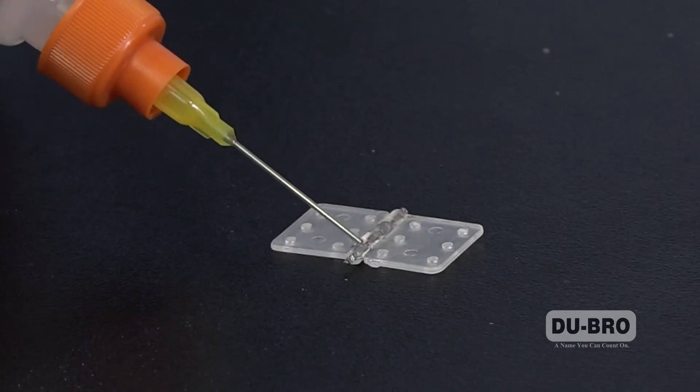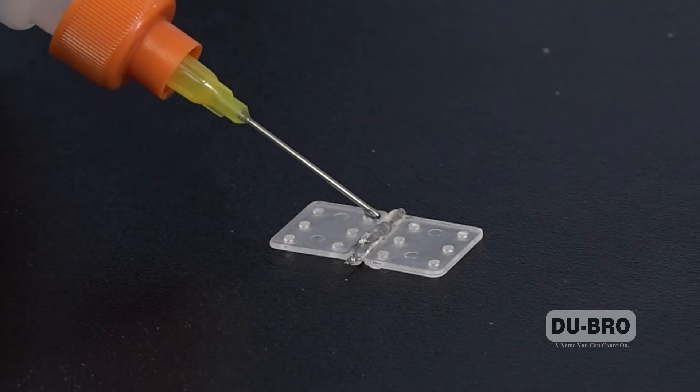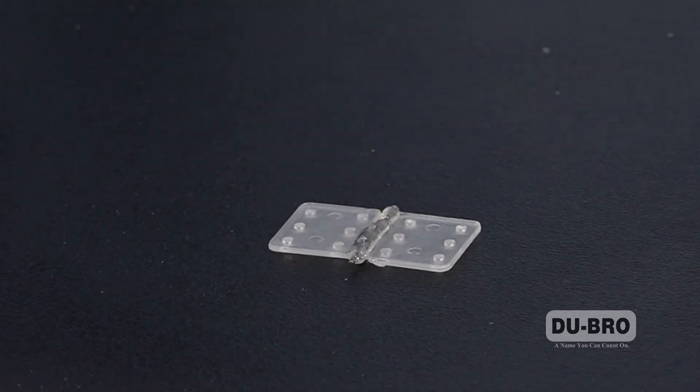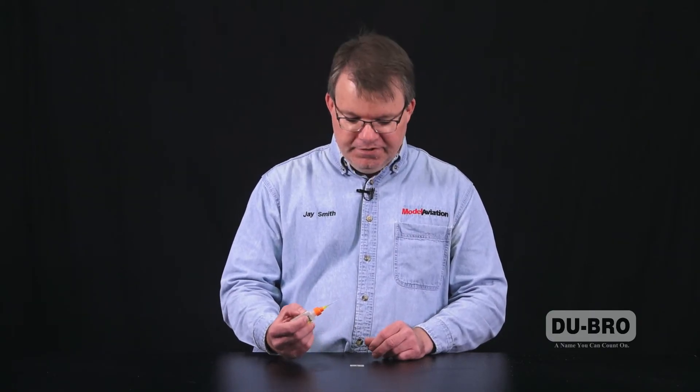where you don't want any glue to penetrate, and that'll protect the hinge. Just keep in mind that wherever you put the oil, the glue is not going to adhere. So this is a really easy tip to make sure that you don't glue your hinges and then find out that one of your control surfaces isn't going to move as expected.